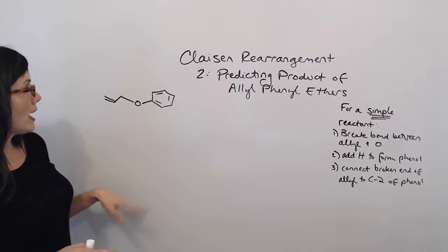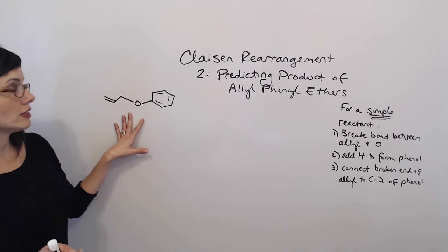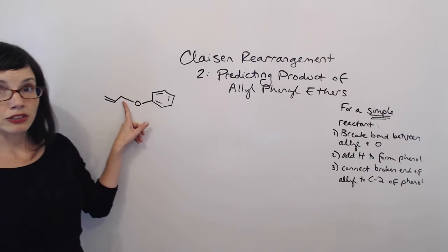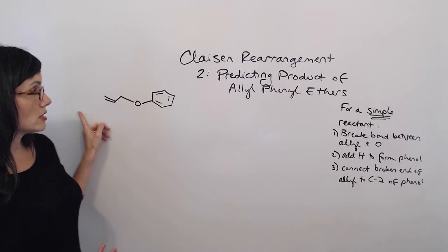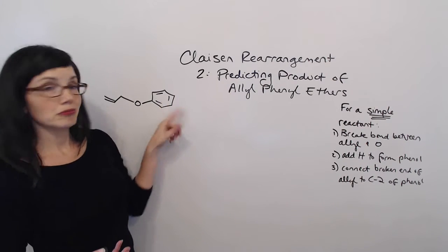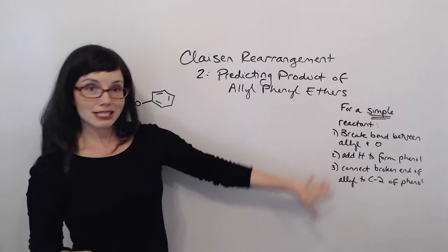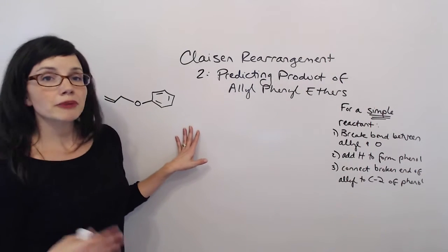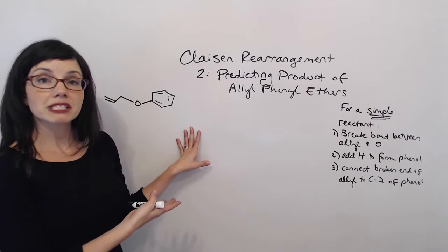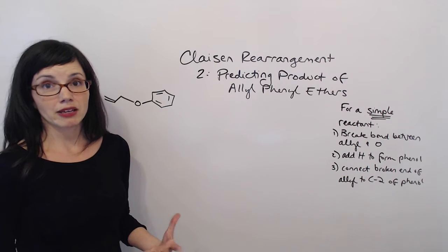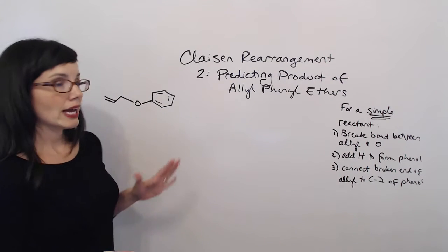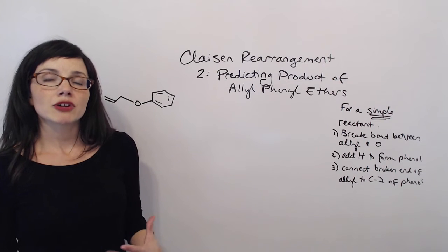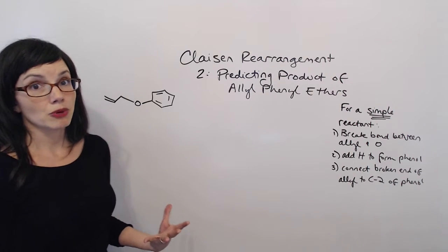So when you do have a very straightforward allyl phenyl ether — see how we only have an allyl group with no extra substituents, and we only have a phenyl group with no extra substituents — these steps are going to work for us. The first thing that we always want to do, whether we're predicting products or doing the mechanism, is set this reactant up in a way that looks the same every time and makes it really easy to work with.